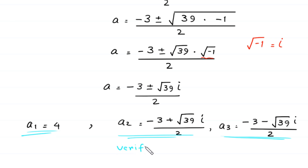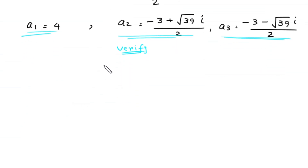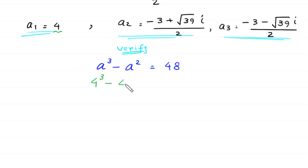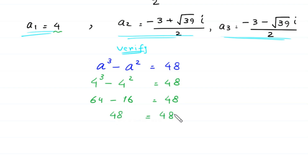Let us verify the real solution a equals 4 by substituting it into the original equation a cubed minus a squared equals 48. We get 4 cubed minus 4 squared equals 64 minus 16 equals 48. The left hand side equals the right hand side, so a equals 4 is a valid solution.